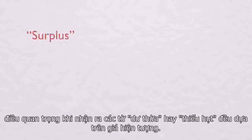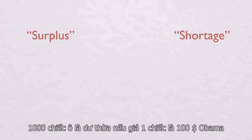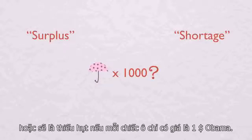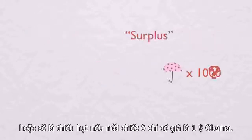It's important to realize that the words surplus and shortage always refer to price phenomena. One thousand umbrellas could constitute a surplus if the price of an umbrella is one hundred dollars, or it could constitute a shortage if the price of an umbrella is one dollar.